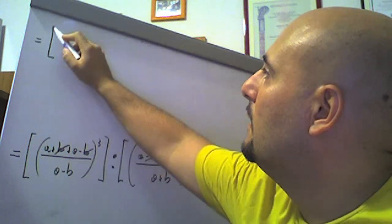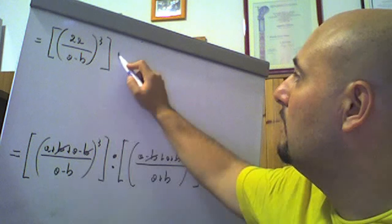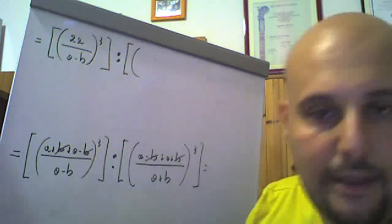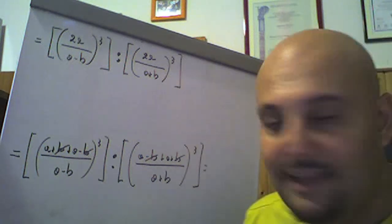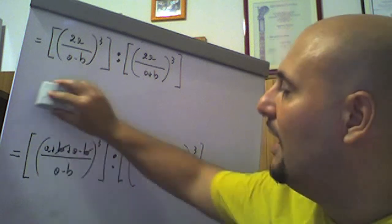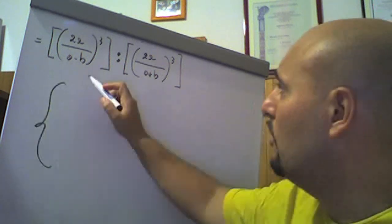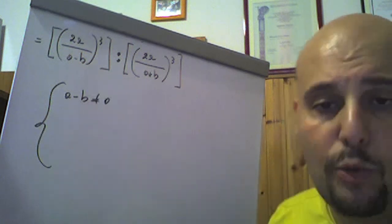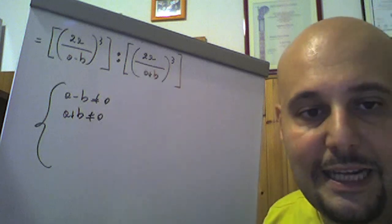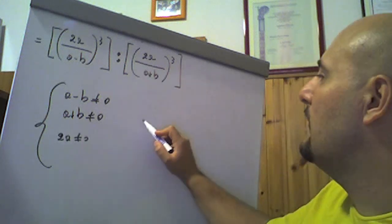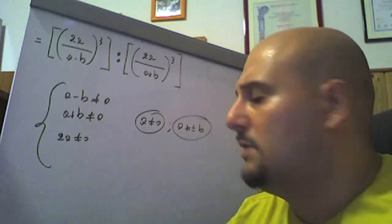In pratica rimane: aperta la quadra, (2a) fratto (a meno b), tutto quanto al cubo, chiusa la tonda al cubo, chiusa la quadra, diviso, aperta l'altra quadra, (2a) fratto (a più b), chiusa la tonda al cubo, chiusa la quadra. Ricordo che una frazione algebrica elevata a potenza ennesima vuol dire elevare rispettivamente al cubo il suo numeratore e il suo denominatore. Pongo le condizioni di esistenza: (a meno b) diverso da 0, perché è il denominatore di questa frazione algebrica; (a più b) diverso da 0 per assicurare l'esistenza della seconda; e poi pongo anche 2a diverso da 0. Di conseguenza a diverso da 0, intersecato con a diverso da più o meno b, sono le condizioni di esistenza.